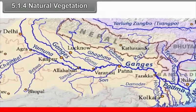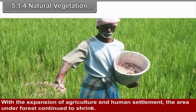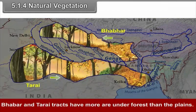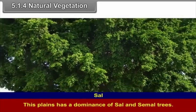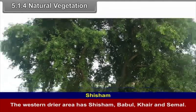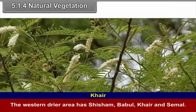5.1.4 Natural Vegetation. The upper Ganga plain was earlier covered by forest. With the expansion of agriculture and human settlement, the area under forest continued to shrink. Bhabar and Tarai tracts have more area under forest than the plains. This plain has a dominance of sal and simul trees. The western area has shisham, babul, kher and simul.